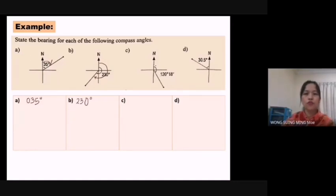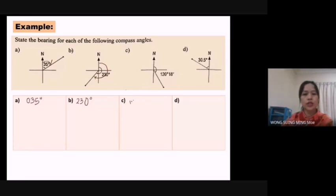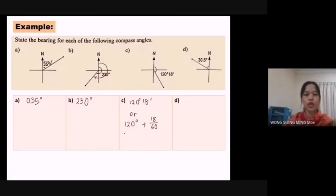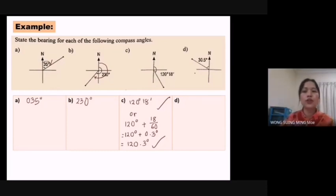For (c), the angle from north to the line is 120° 18 minutes. We can write it as 120° 18', or convert to decimal degrees: one degree equals 60 minutes, so 18 divided by 60 gives 0.3. Therefore 120° + 0.3° = 120.3°. Both answer forms are accepted. Remember: the bearing of a point must be measured in degrees in a clockwise direction from the north.